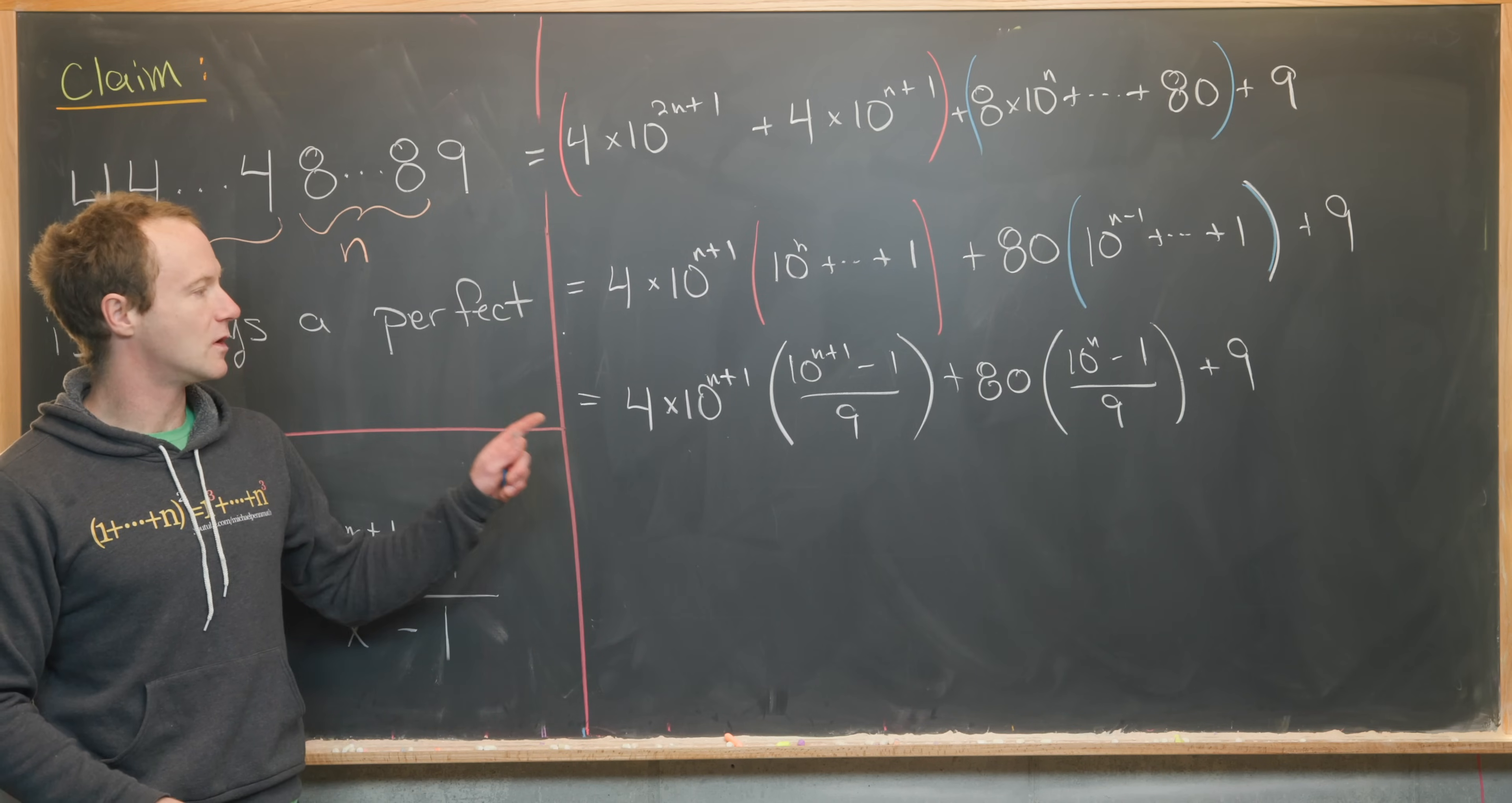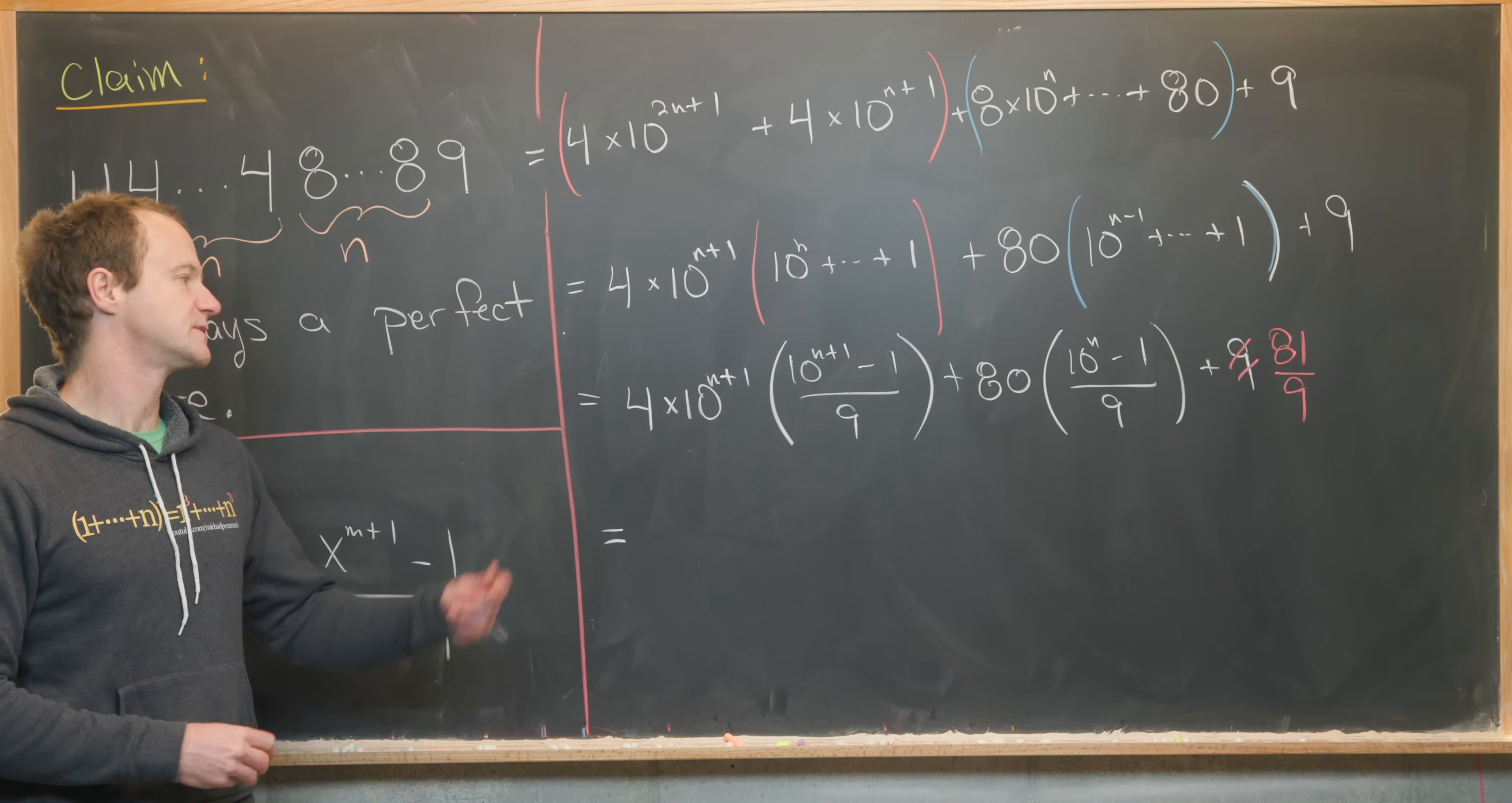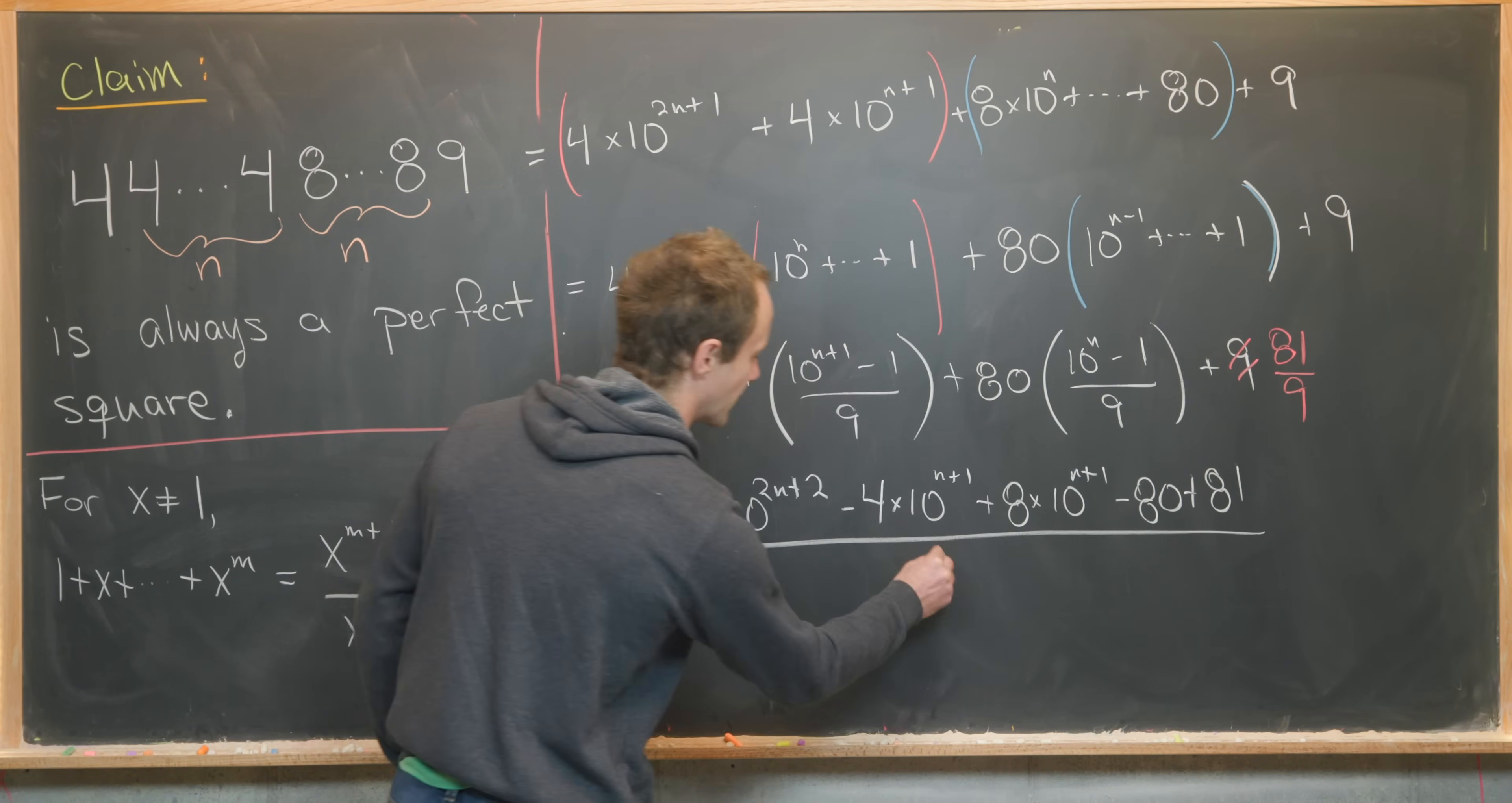Okay, nice. Now we'll maybe distribute each of these through. So this 4 times 10 to the n plus 1 onto both of those terms, and the 80 onto both of those terms. And then also give ourselves a common denominator. So this is all one object. So the common denominator will be 9, which means we need to rewrite this as 81 over 9. Okay, so let's see what that leaves us with. We'll have 4 times 10 to the 2n plus 2. So that's what we get from multiplying this to this minus 4 times 10 to the n plus 1 plus 8 times 10 to the n plus 1 minus 80 plus 81. And this is all over 9.